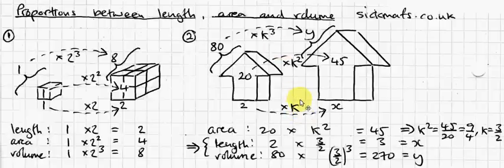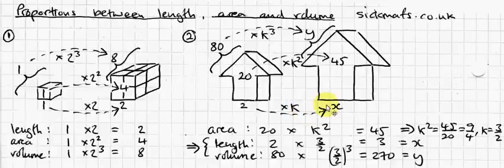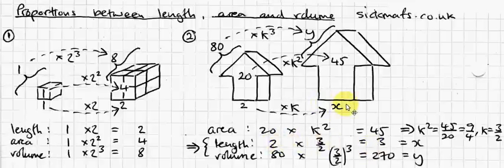So, let's work out the length between these two similar houses. And the width of this is 2. So, I have to times it by k, but I've worked out k is 3 over 2. So, 2 times 3 over 2 is 3. So, the width of this, or length of x, is 3. I've just worked out that.